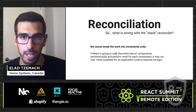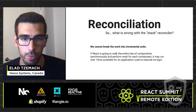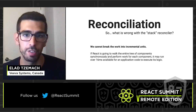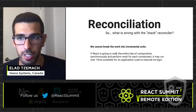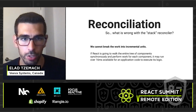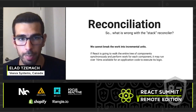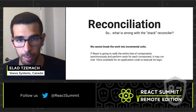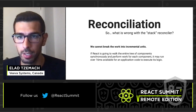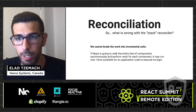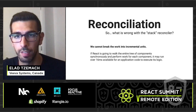So what is really wrong with the stack reconciler? I have a quote from Andrew Clark, one of the React core team members at Facebook: 'In UI it's not necessary for every update to be applied immediately. In fact, doing so can be wasteful, causing frames to drop and degrading the user experience.' With the old reconciliation algorithm, we couldn't break the work into incremental units. If React was going to walk the entire tree of components synchronously and perform work for each component, it may run over the 16 milliseconds available for application code to execute its logic.